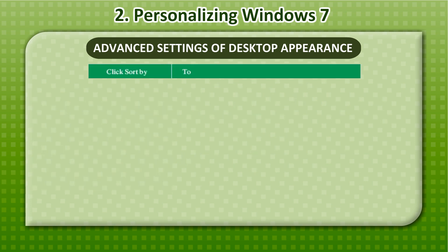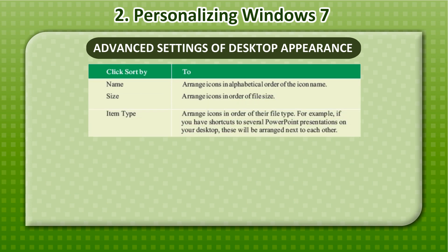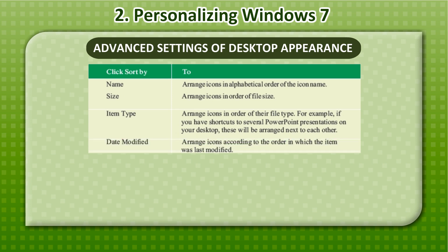Click Sort By: Name — arrange icons in alphabetical order of the icon name. Size — arrange icons in order of file size. Item Type — arrange icons in order of their file type; for example, if you have shortcuts to several PowerPoint presentations on your desktop, these will be arranged next to each other. Date Modified — arrange icons according to the order in which the item was last modified.